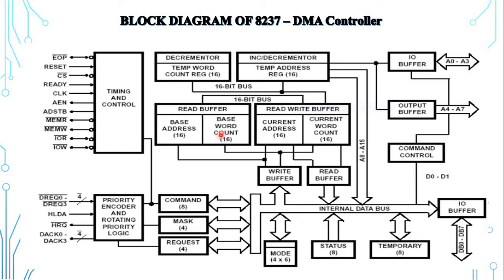The 8237 contains 24 internal registers: base address register, base word count register, current address register, current word count register, temporary address register, temporary word count register, status register, command register, temporary register, mode register, mask register, and request register. The base, current, and temporary registers are 16 bits in size. The remaining registers are 8 bits.